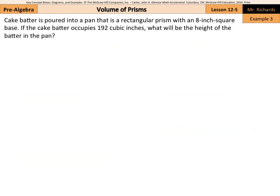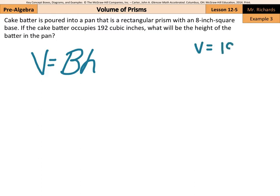Cake batter is poured into a pan that is a rectangular prism with an 8-inch square base. If the cake batter occupies 192 cubic inches, what will be the height of the batter in the pan? Well, our volume formula is the area of the base times the height. And let's look at what we're given here first. We're given the volume is 192 cubic inches.